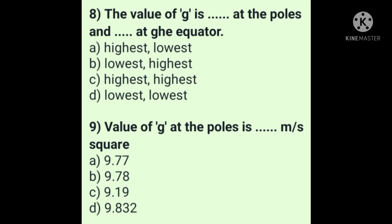Question 8: The value of g is highest at the poles and lowest at the equator — answer is option A. On the surface of the earth, g is higher at the poles (9.832 m/s²) and lower at the equator (9.77 m/s²). This depends on the distance of the object from the centre of the earth. Since the equator is farther from the centre than the poles, gravitational force is greater at the poles.